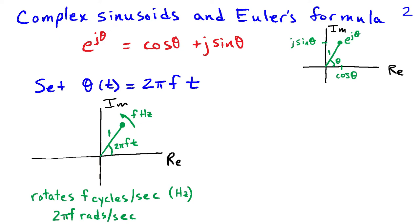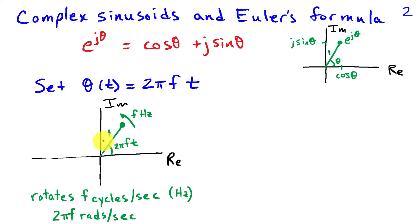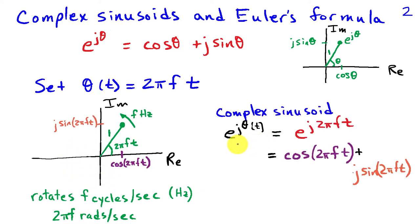We obtain a complex sinusoid by letting our angle theta vary with time in a linear fashion. We define theta of t to be 2 pi f t. Our point is still unit distance from the origin, and we allow this point to rotate around the origin at f cycles per second, or f hertz. So the angle is 2 pi f t, and it keeps wrapping around the circle. This gives us our complex sinusoid: e to the j 2 pi f t.